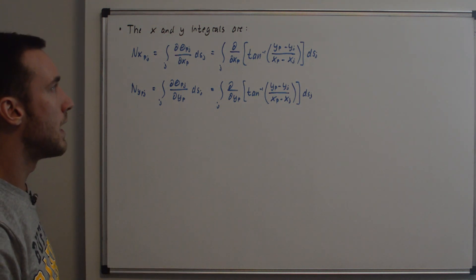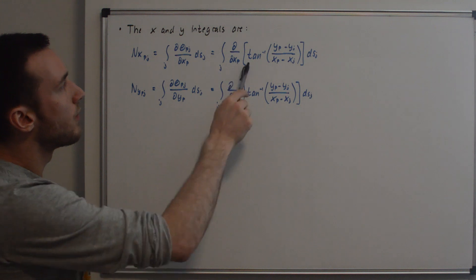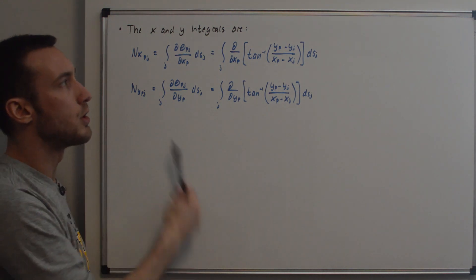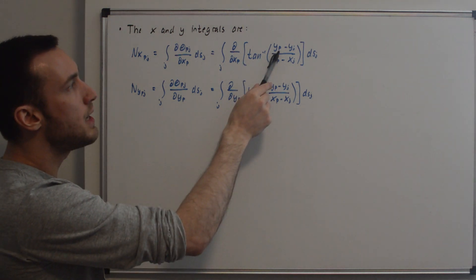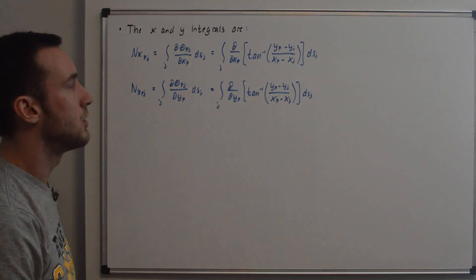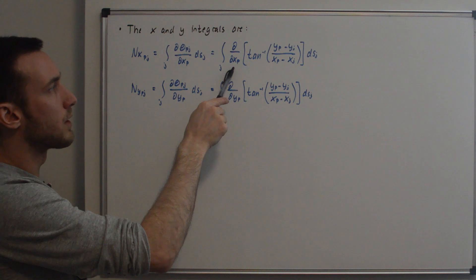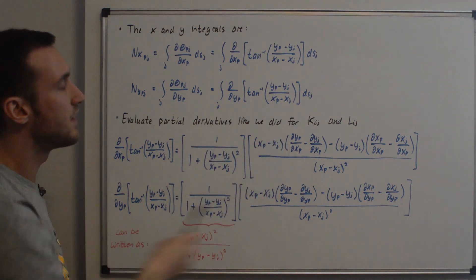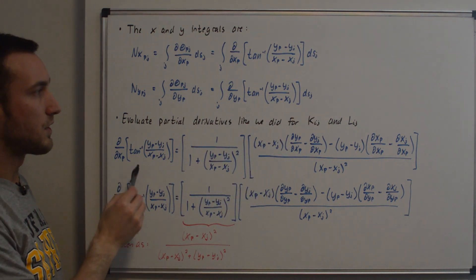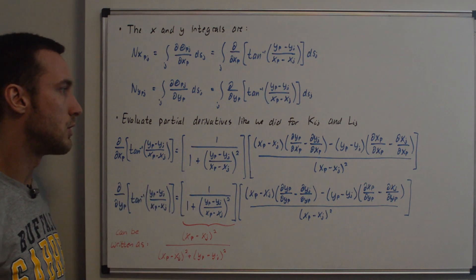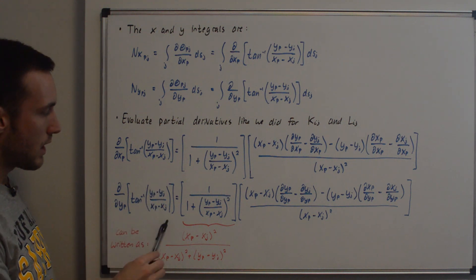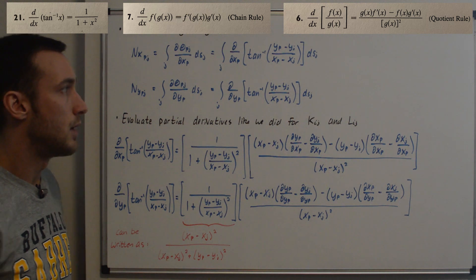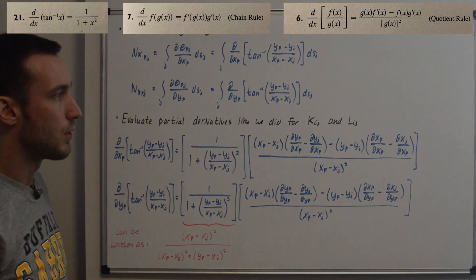So we have the partial derivative with respect to x and the partial derivative with respect to y of the inverse tangent of (y_P minus y_j) over (x_P minus x_j). Before evaluating the integral, we have to evaluate the partial derivative inside it. This is the same approach as in the K_ij and L_ij videos — the x term is in the numerator and the y term below — using the chain rule and the quotient rule evaluated for these expressions.